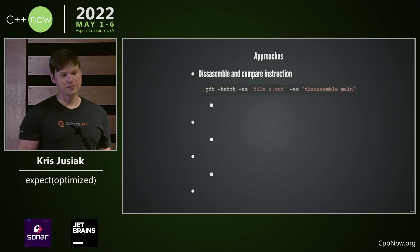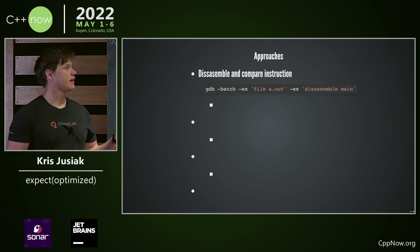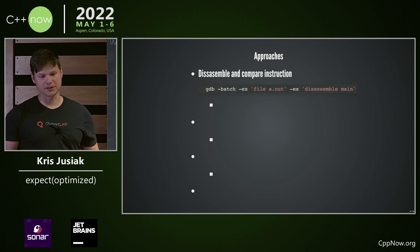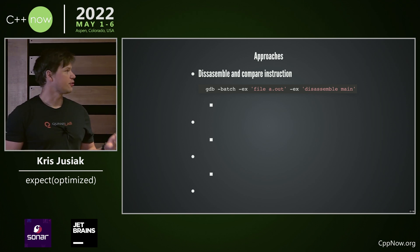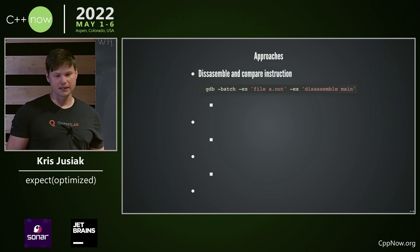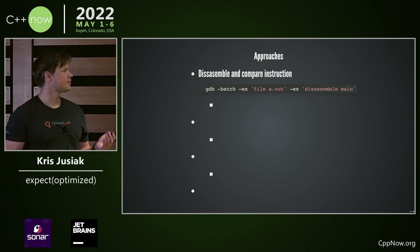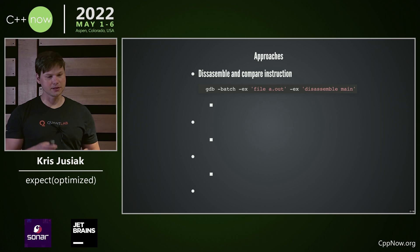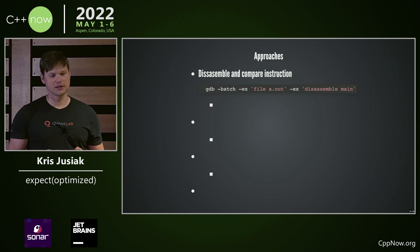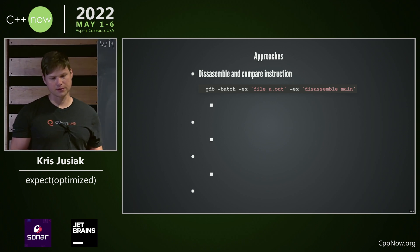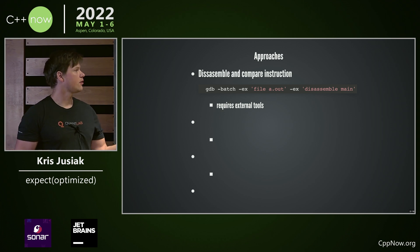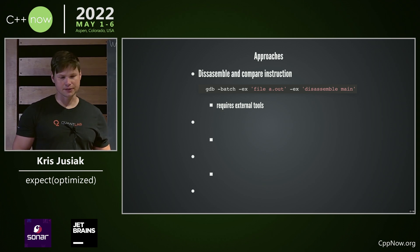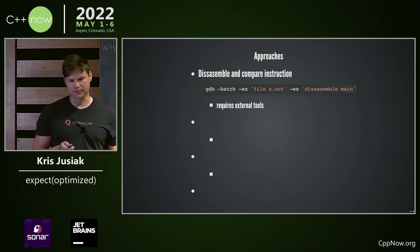That might be done with, for example, GDB to get the function assembly and try to compare it. However, that's kind of difficult because instructions might be in a different order, there are memory addresses to check, so there's a lot of magic there, and it also requires external tools — so not ideal.